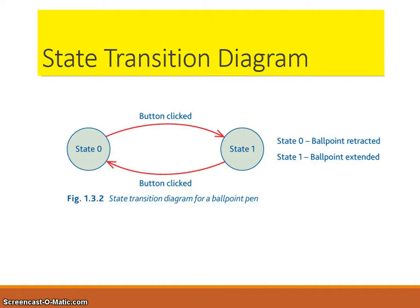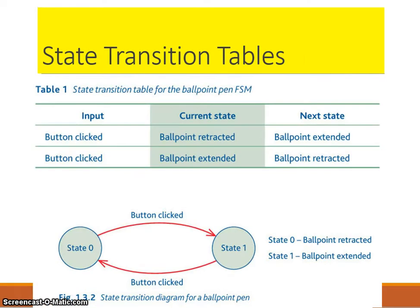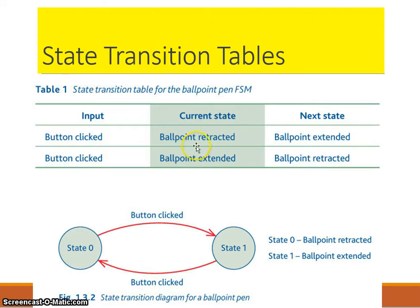A state transition diagram is one way to represent it, but we could also use a state transition table. A table models the inputs, the current state, and what the next state would be. So if the current state is the ballpoint retracted and the input is button clicked, the next state is the ballpoint extended.